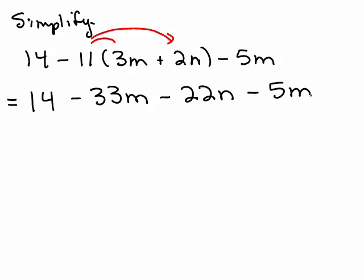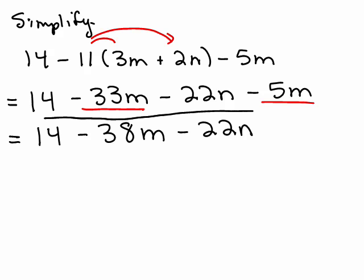Now we're going to look for like terms. I have a constant here of 14 and no other constants. I have an m term here and another m term, so those can be combined. So I have a negative 33 and a negative 5. So if you add those together, negative 33 plus negative 5 is negative 38, and the variable part was m. Remember, we just write the variable part down. And then we have a negative 22n, there are no other like terms with that, so I hope this is what you got. Now remember, the order of the terms does not matter. I like to write it in alphabetical order, or you could put, start with the m and the n, and you could put the plus 14 at the end, it's really up to you.